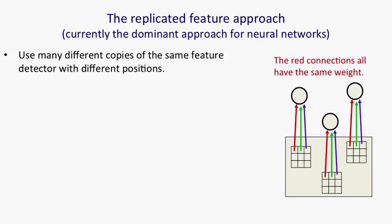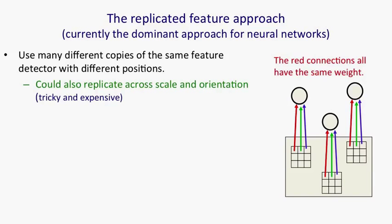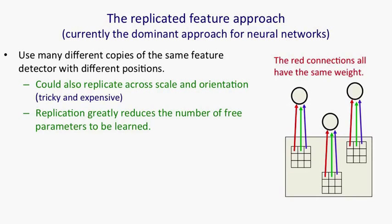The red arrow has the same weight on it for all three feature detectors. And when we learn, we keep those red arrows all having the same weight as each other and we keep the green arrows all having the same weight as each other, even though the red and green arrows will have different weights. We could also try replicating across scale and orientation, but that's much more difficult and expensive and probably not a good idea. Replication across position greatly reduces the number of free parameters that you have to learn. So those 27 pixels that you see in those three replicated detectors only have nine different weights.